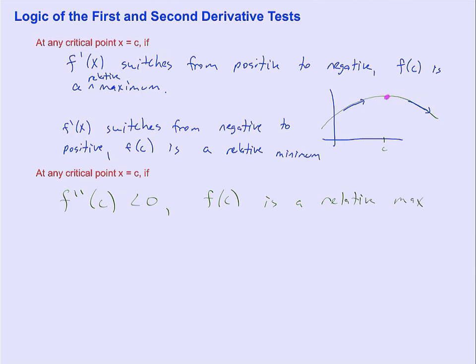The reason why we can see that's the case is, look at the drawing I have up here of a relative max. Throughout this section of the graph where the critical point is a relative max, notice that this function, the green function that I drew, is concave down,